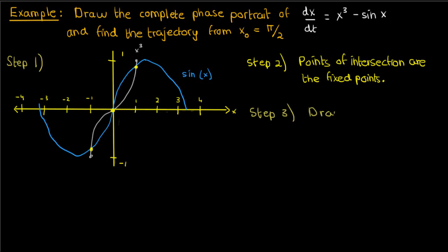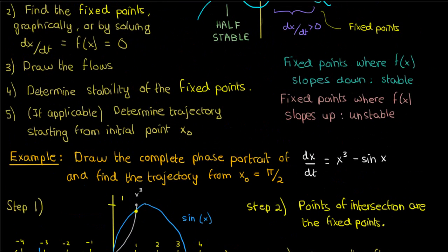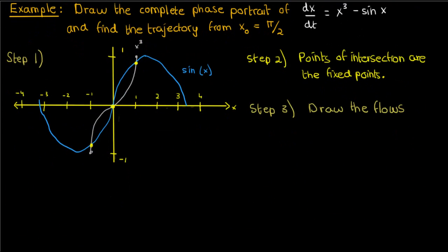Now the third step is to draw the flows, and since the differential equation is x³ - sin(x), the regions on the phase space, which in this case is the x-axis, the regions on the phase space where x³ is greater than sin(x), that region is where dx/dt is positive, where x tends to increase. In contrast, the region where x³ is less than sin(x) is where dx/dt is negative, and x tends to decrease.